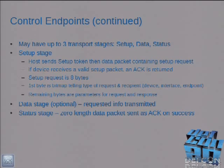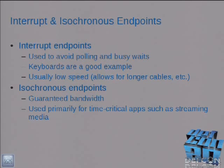Control endpoints have three stages in a transfer: a setup stage — let's talk — maybe a data stage depending on the kind of communication, and then a status stage where you just send a zero-length packet back that says ACK — we're all good. Interrupt endpoints are for infrequent communications like mice and keyboards. Isochronous endpoints are good for streaming media.